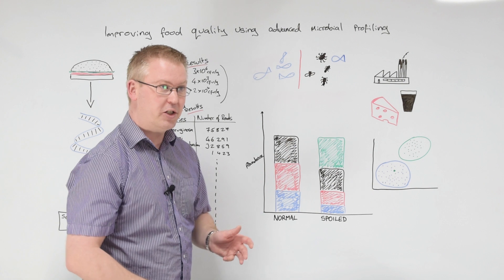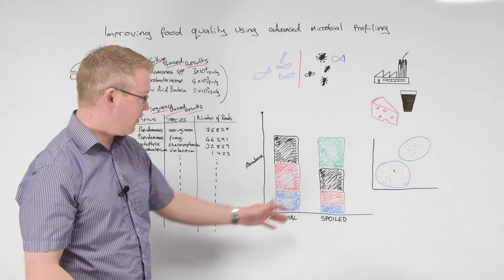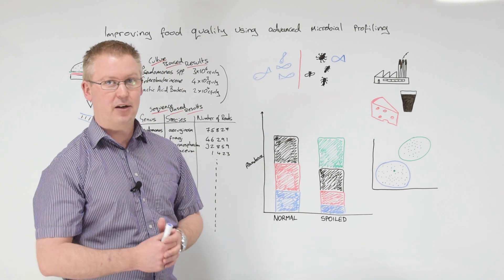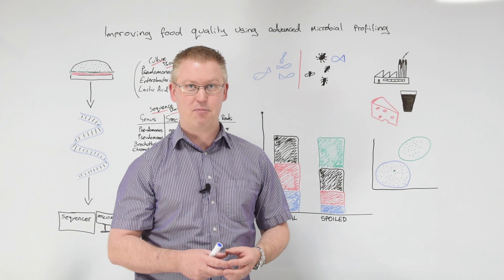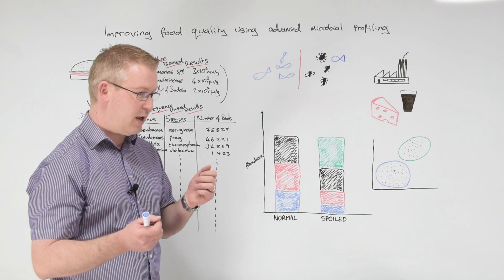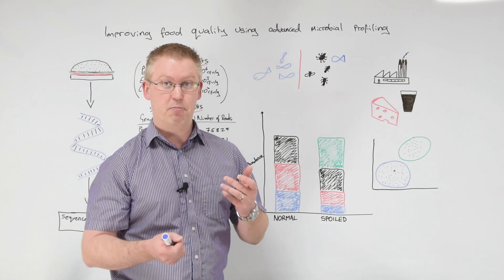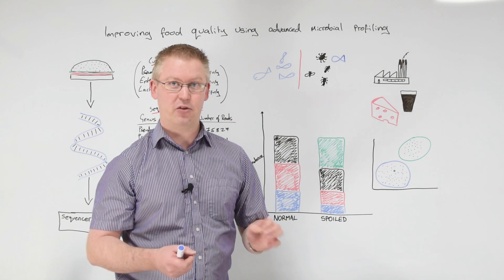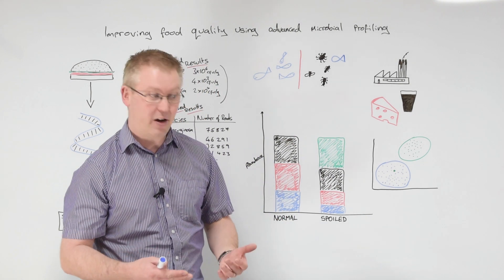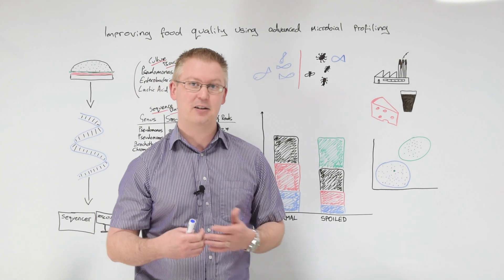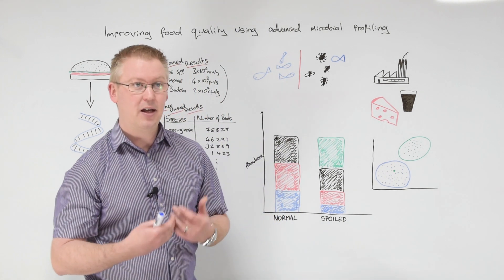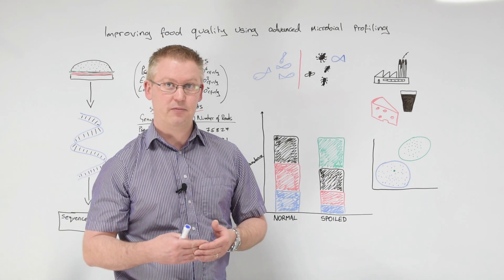We can also use this for spoilage investigations as well. So here we have a diagram based on some work we did for a client. And in this particular case, what we had was some chicken. It was basically a chicken breast in a modified atmosphere packet. And the chicken breast was spoiling. It was going blue. There were some blue patches on the surface of that chicken breast. And the first thought was, well, are these blue patches maybe dyes? Has there been some leaching of a dye from the packaging into the product? And our chemists confirmed that that was not the case. So we got hold of the product and ran a spoilage investigation using AMP.